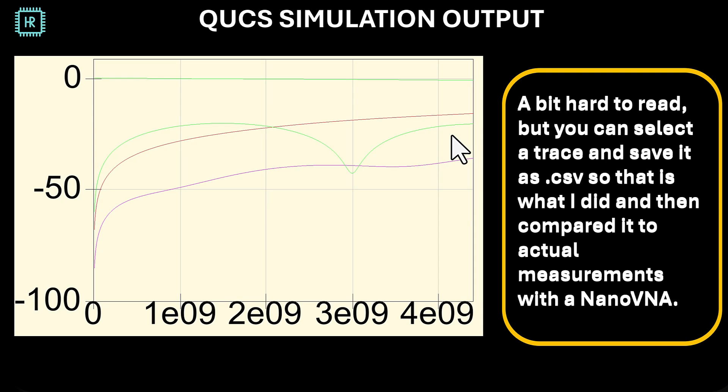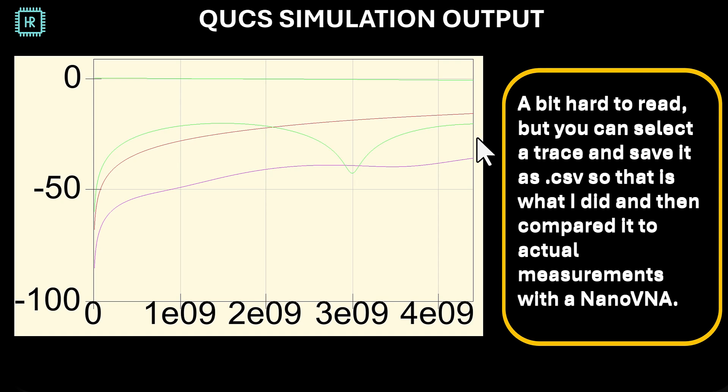So now that we have a simulation result it will be very interesting to compare it to a measurement result. This is the measurement setup. A laptop running nanoVNA saver, a nanoVNA and the actual coupler. Now here you see a detailed view of the measurement setup. I've added a 10 dB attenuator because the input match of port 1 of the nanoVNA is not very good. And since we're measuring reflections as well we need a very good match. So I included a 10 dB attenuator to improve the matching. I used 20 dB attenuators as loads because the loads I have appear to only be good until about 1 GHz. And we're measuring up to 4.4 GHz. And these attenuators were very good. So I'm using those.